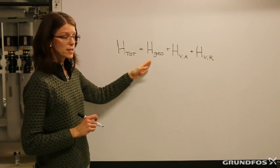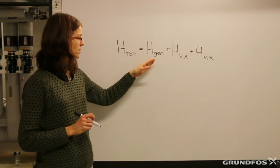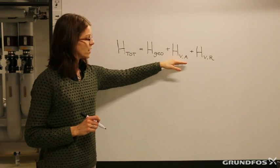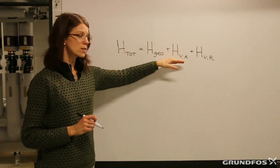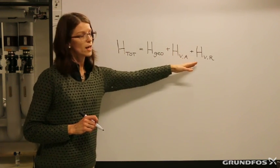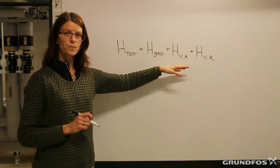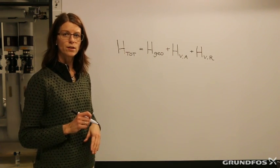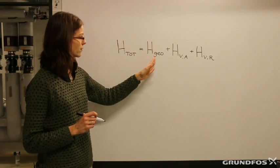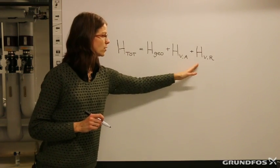The geodetic height is independent of the flow rate in the system — it's a constant — whereas the friction loss in the fittings, valves, and linear pipe is a dynamic value. It depends on the flow in the system. So we have a static value and we have a dynamic value.